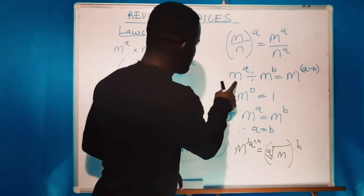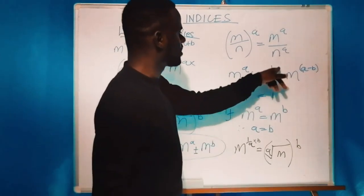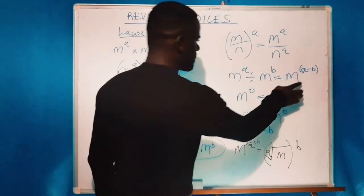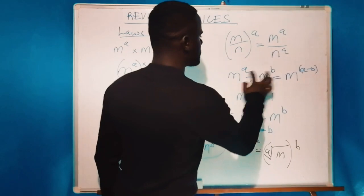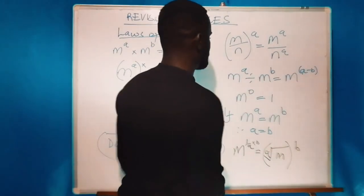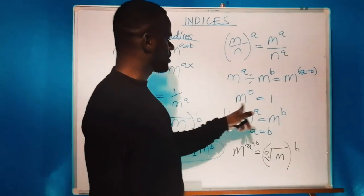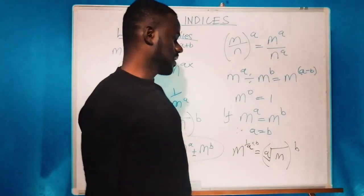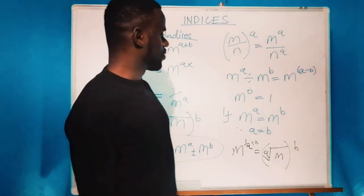The sixth law: m raised to power a divided by m raised to power b is the same as taking the same base and finding the difference of the powers, giving m raised to a minus b. The seventh law: m raised to power zero equals one — any number raised to power zero is equal to one.